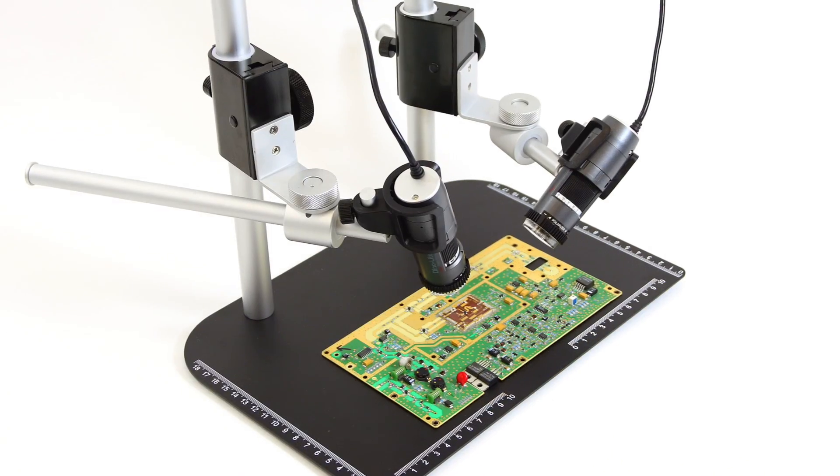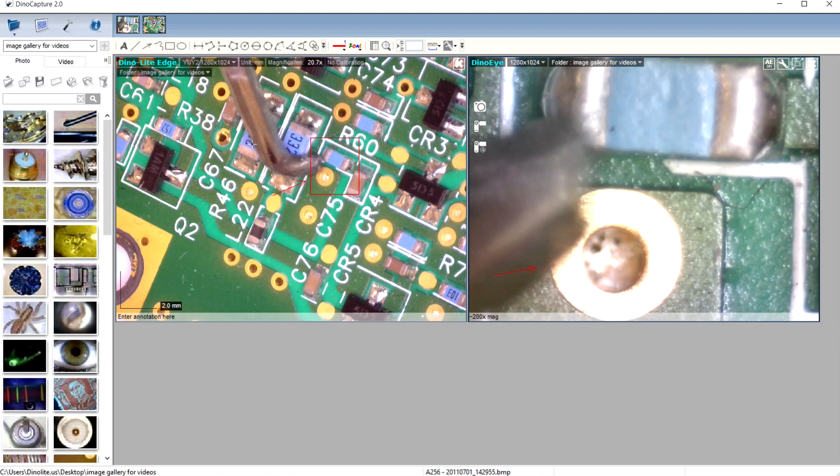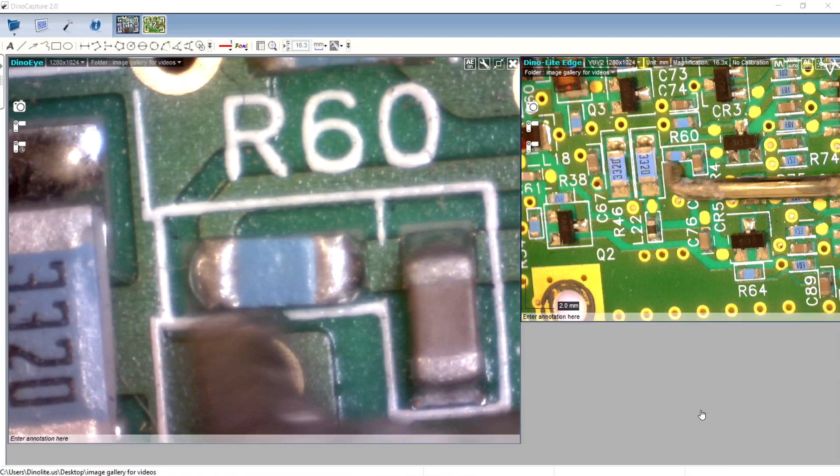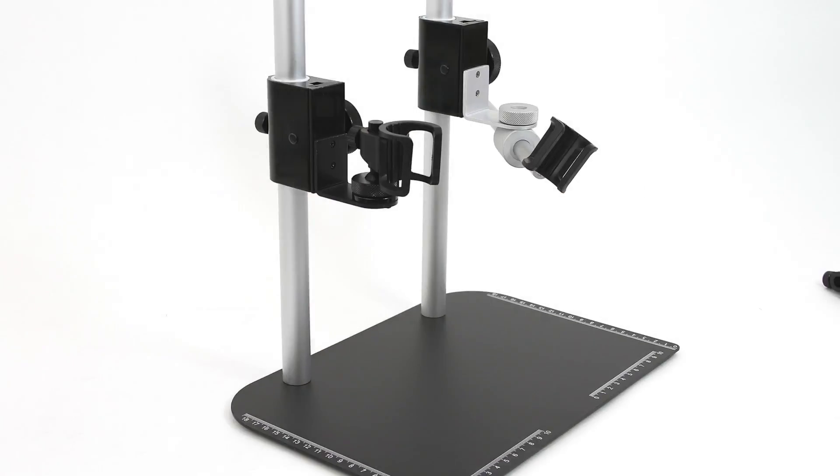The MS37B is a great option for users who require inspection with two Dino-Lite microscopes as well as viewing at different angles.